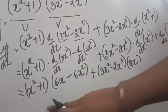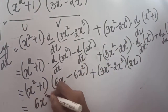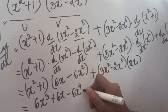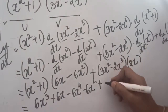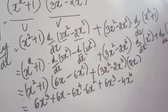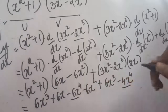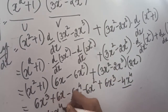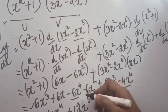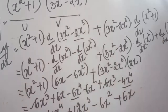For the second bracket, (3x²−2x³) remains the same, multiplied by the differentiation of x², which is 2x, and differentiation of 1 is 0. Opening the brackets and simplifying, we get 6x³ + 6x − 6x⁴ − 6x², plus 6x³ − 4x⁴. Combining like terms: powers of 4 give −10x⁴, powers of 3 give +12x³, powers of 2 give −6x², and the remaining term is +6x. This is the final answer.